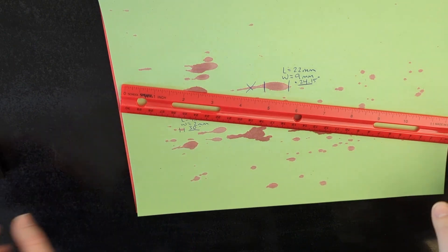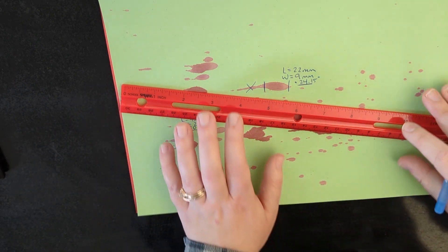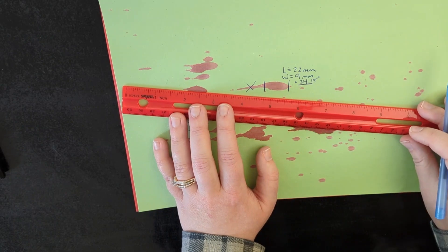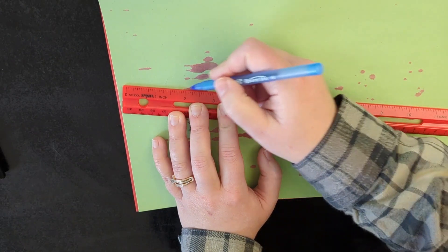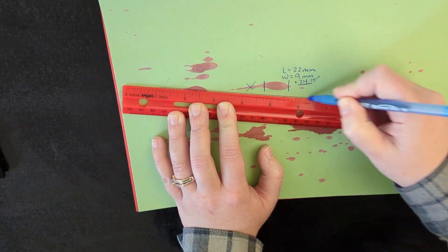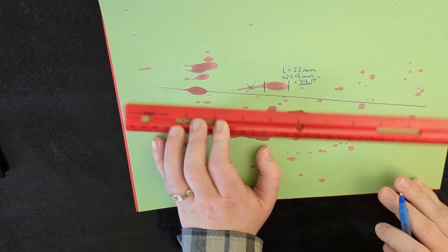Lines of convergence is, just like it sounds, where the lines converge. So you want to measure straight through the middle or axis of the blood drop straight through the tail. And don't be afraid to make your lines super long.